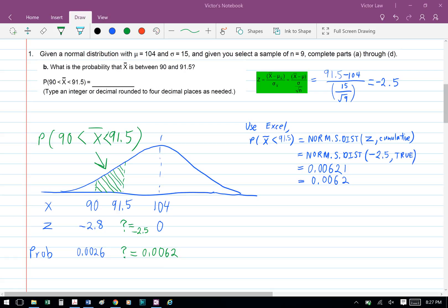So we have 91.5 minus 104 divided by 15 over square root 9, which gives us negative 2.5.